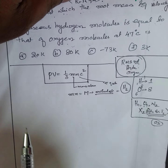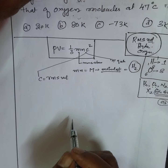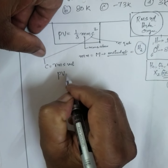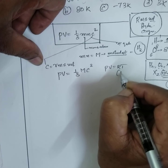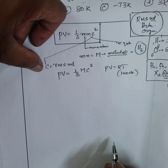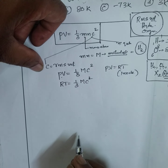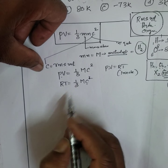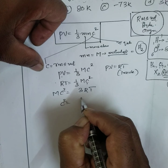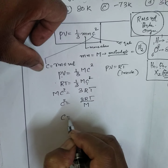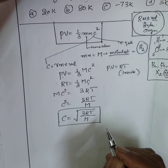Now, let's calculate the RMS velocity c. Starting from pV = ⅓Mc², and knowing that for one mole of a gas pV = RT, we substitute: RT = ⅓Mc². Cross-multiplying gives Mc² = 3RT, so c² = 3RT/M, and therefore c = √(3RT/M). This is the formula everyone must remember.